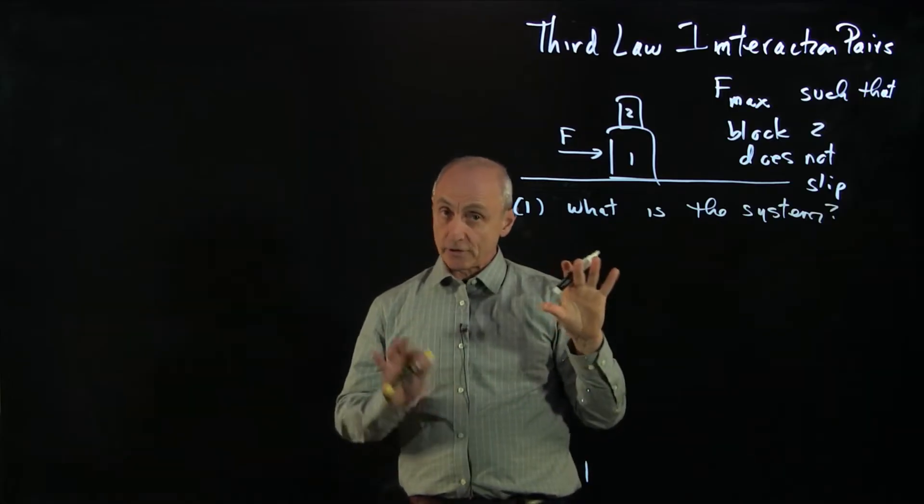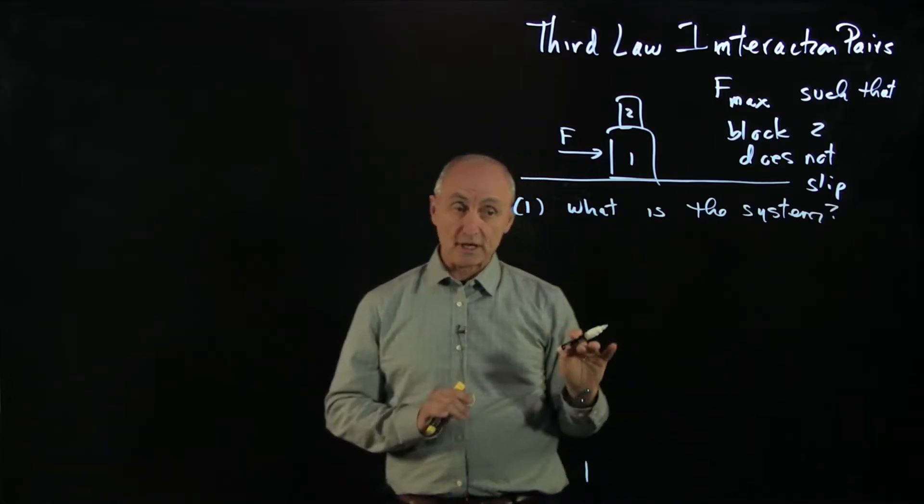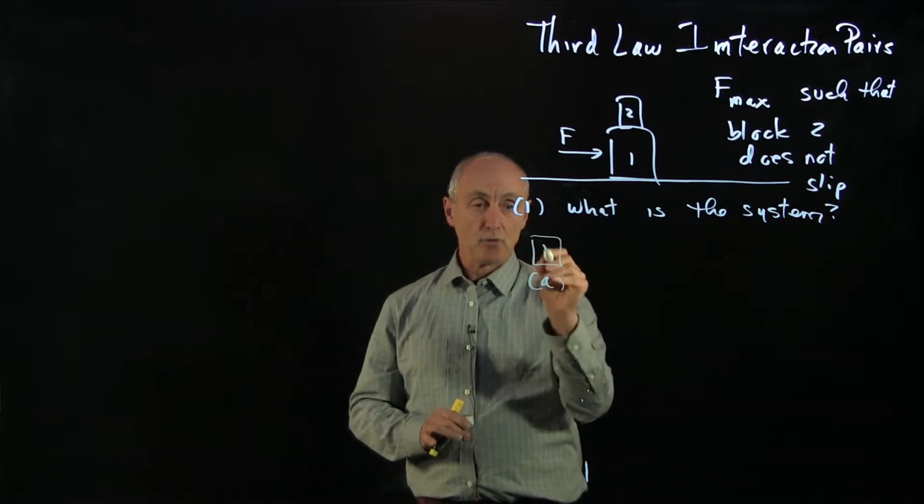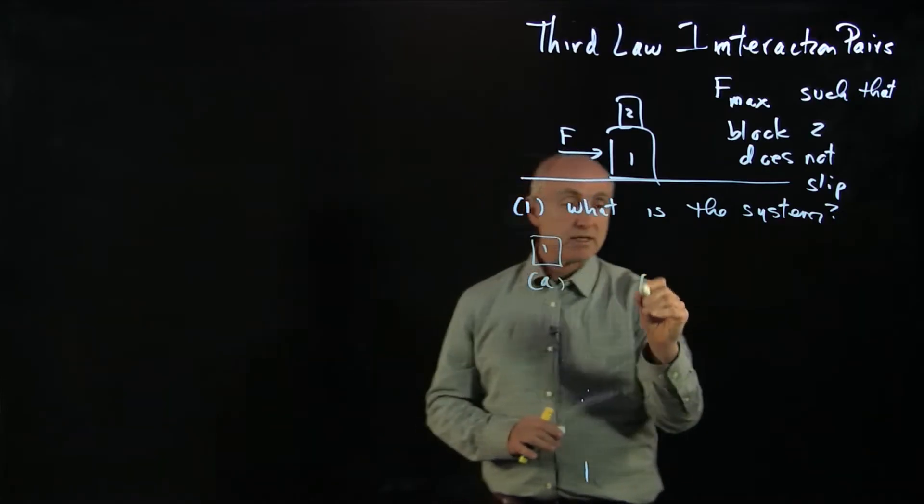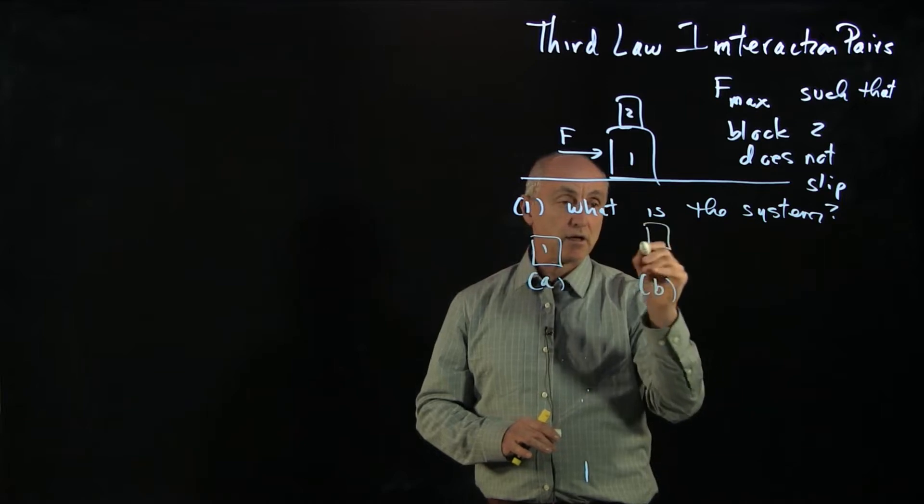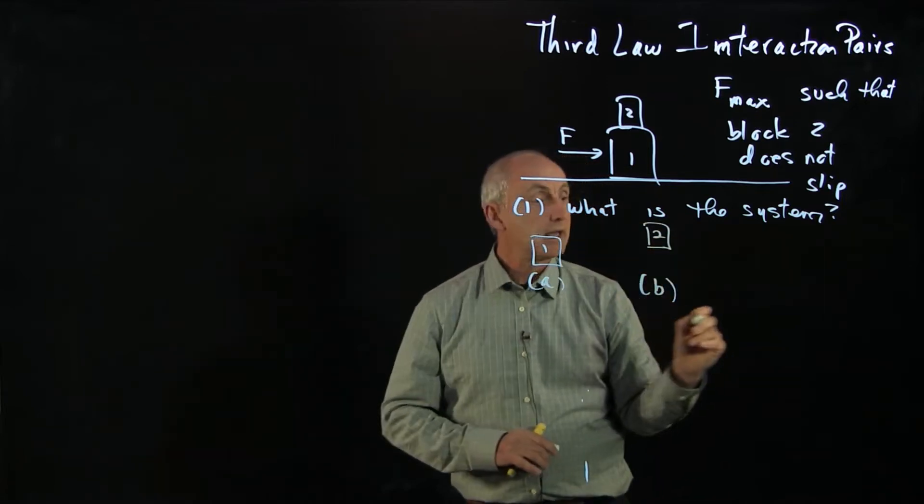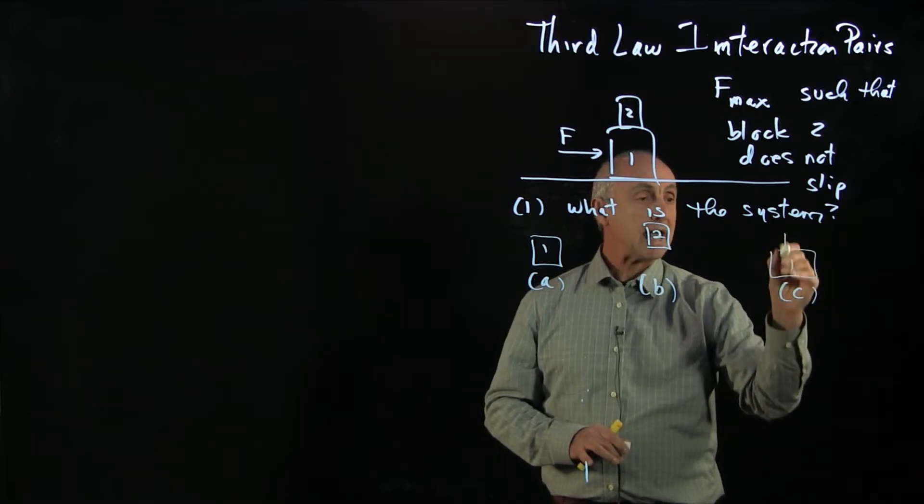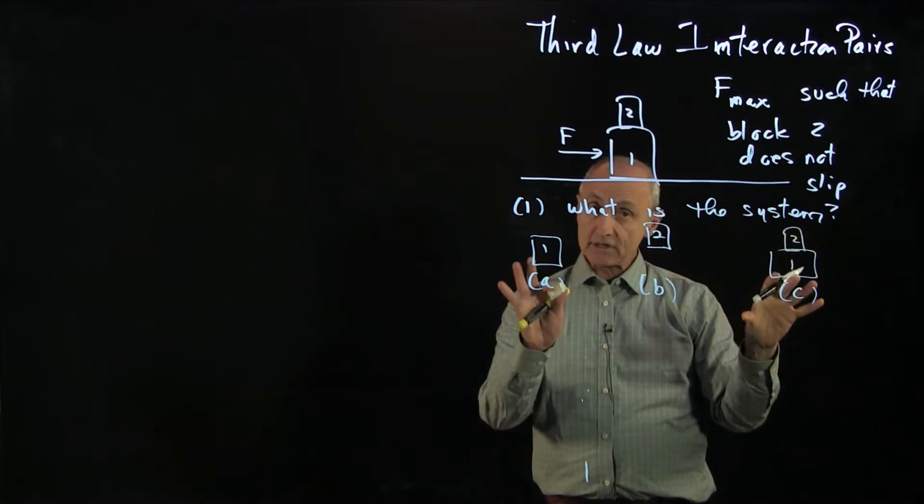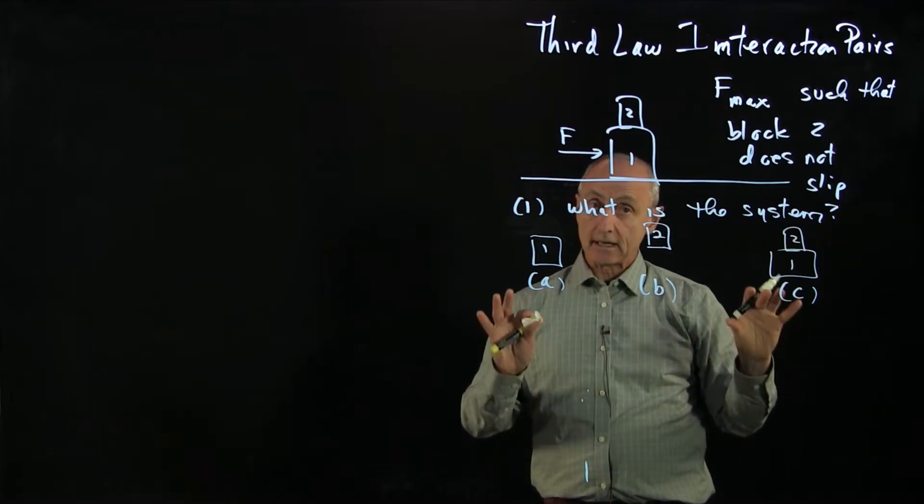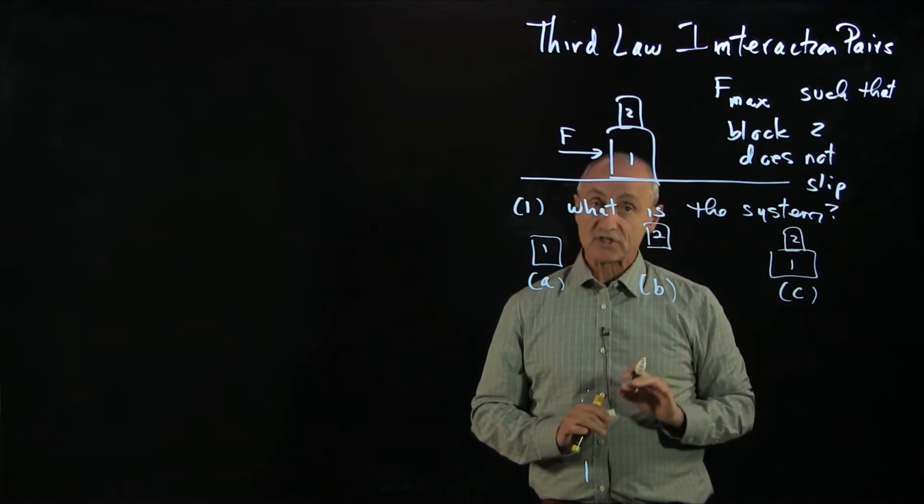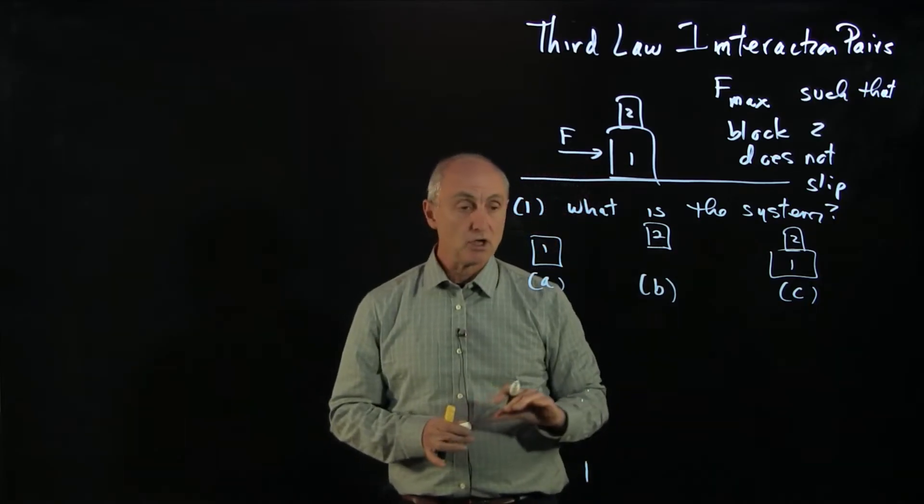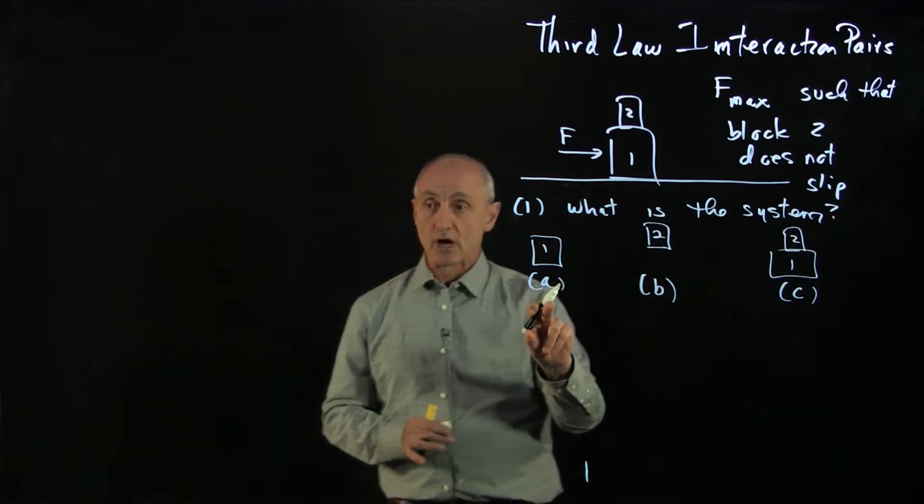And in this problem, there are three separate ways to think about this, just to show you an example. System A will be block one, system B will be block two, and system C will be blocks one and block two. And given these different systems, I can address different questions. We'll see that as we develop this. So let's start with block one.